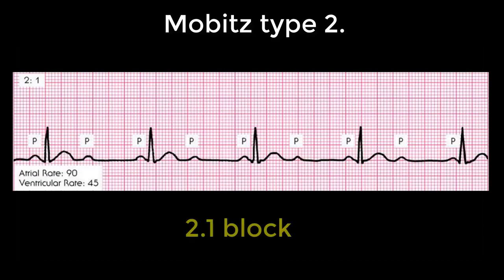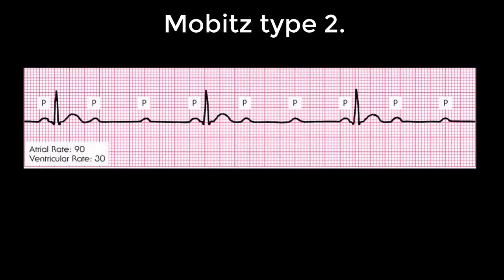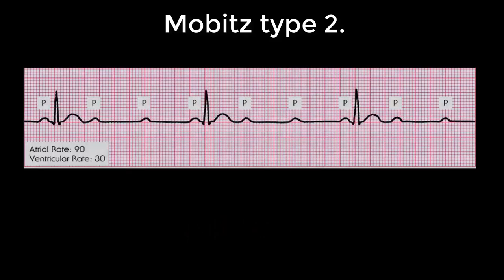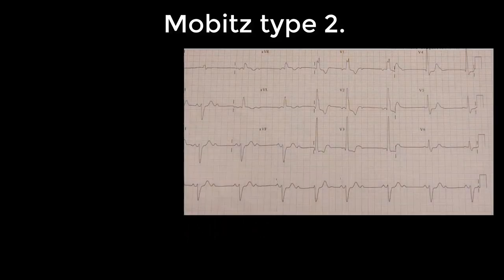It may be that every second P wave gets through — a two to one block — as we can see demonstrated here. And here's another example. Here is an example where only every third P wave gets through — a three to one block. So this would be Mobitz type two, three to one block.